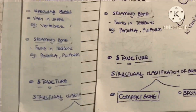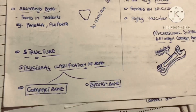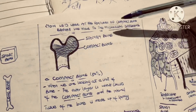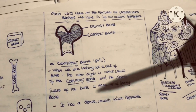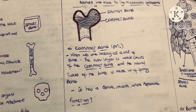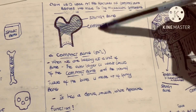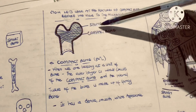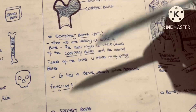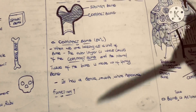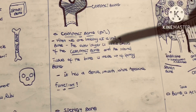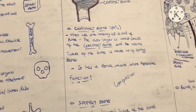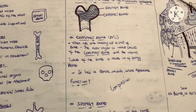Based on structure, we have two main types of bones: compact bone and spongy bone. When looking at a unit of bone, the outer layer consists of compact bone and the internal tissue is the spongy bone. The compact bone is very dense, smooth, and white in appearance. Because it is very dense, it helps the bone resist compression.